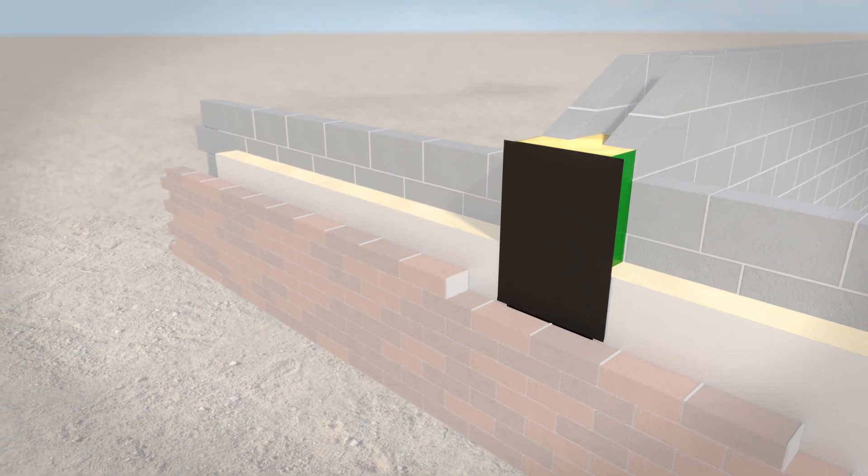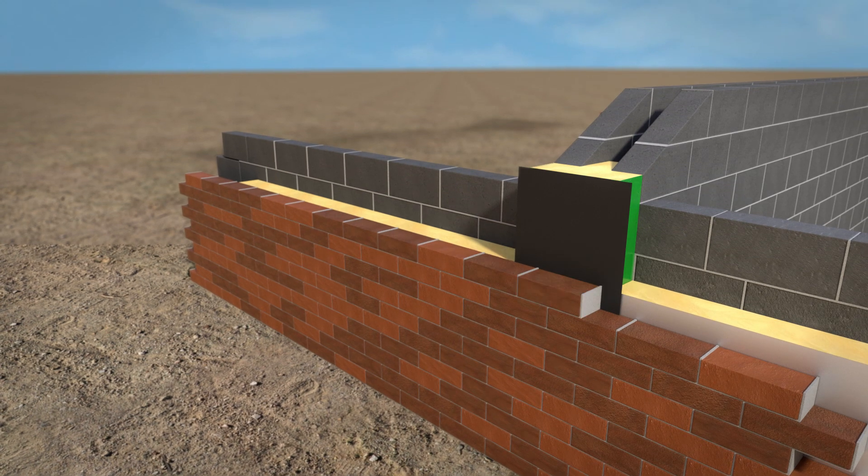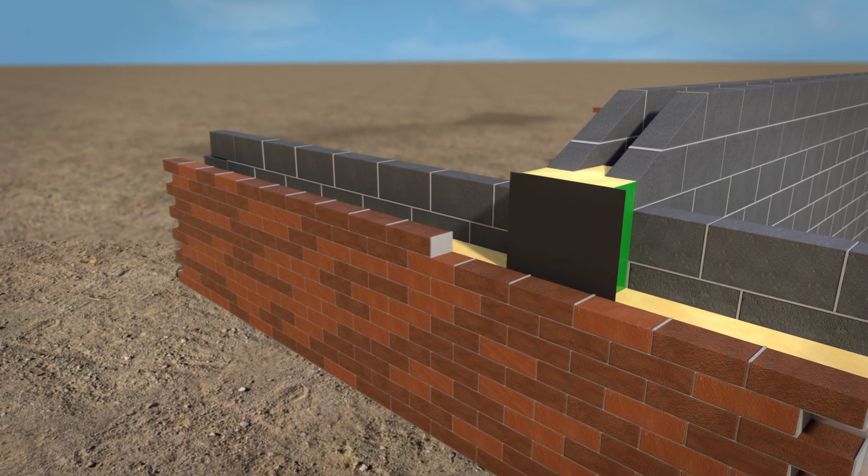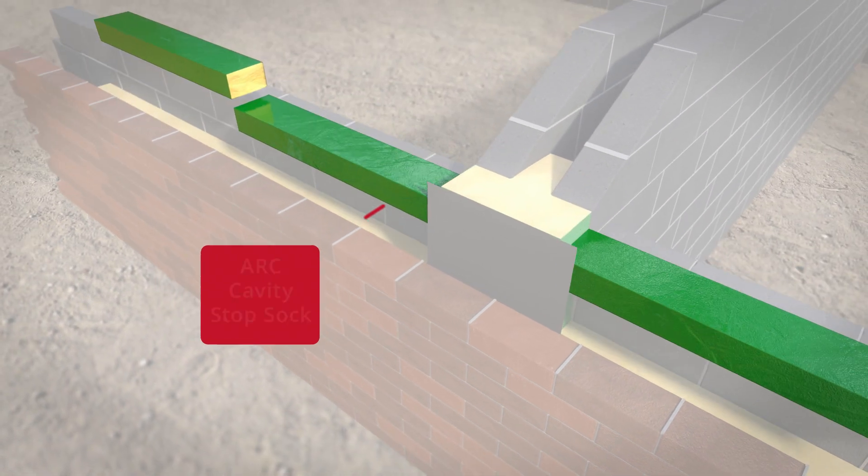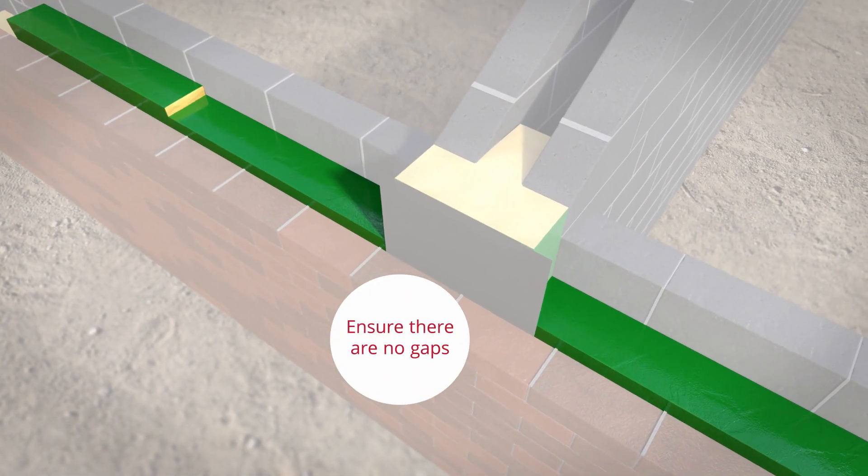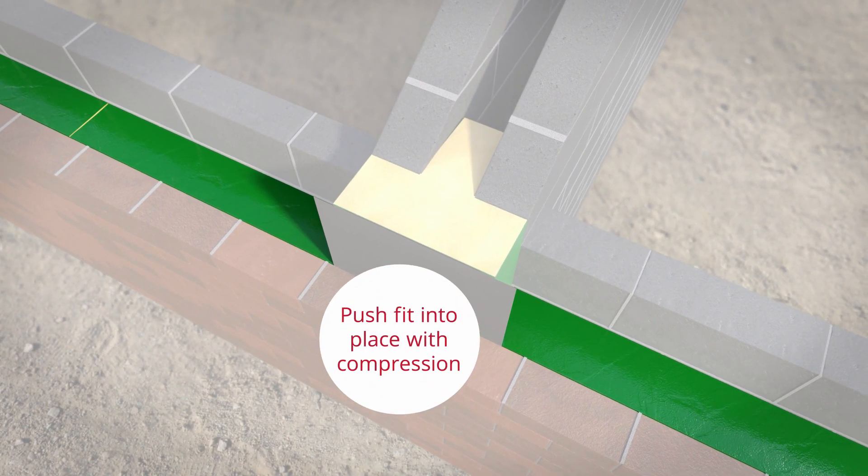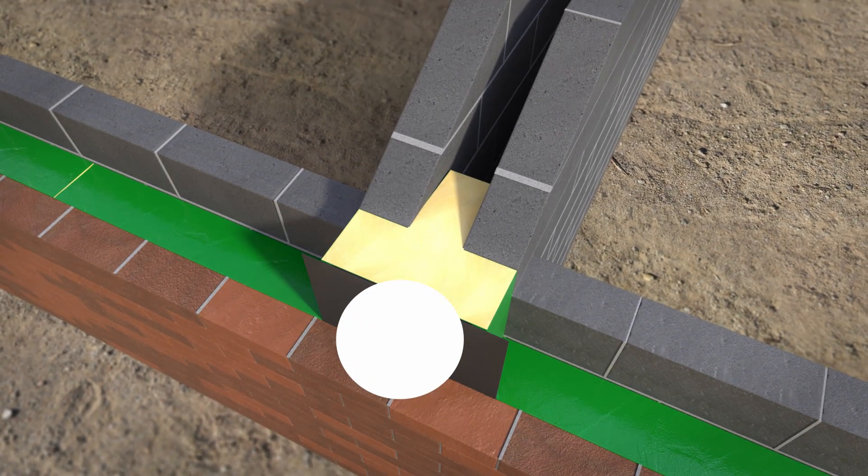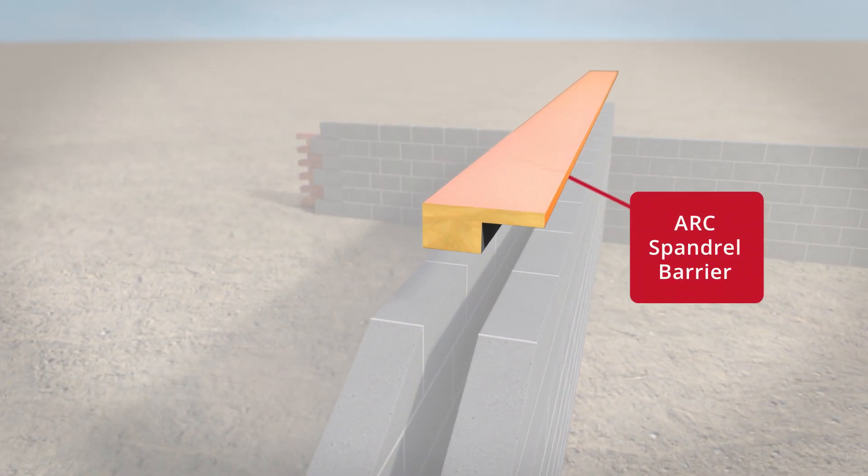Once the external brickwork has reached the top of the party wall, the Arc Cavity Stop Sock is compression fitted at the wall plate, with joints tightly butted together with no gaps. This restricts the spread of smoke and flames within external masonry walls.